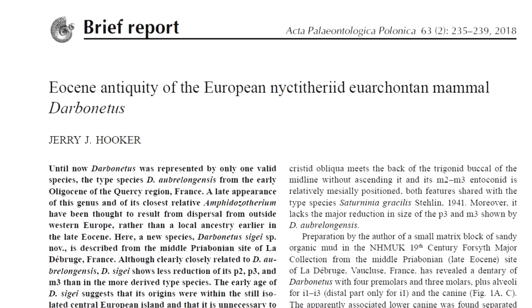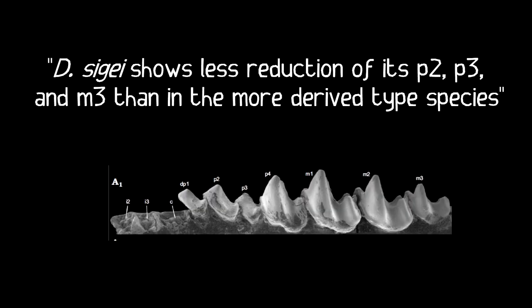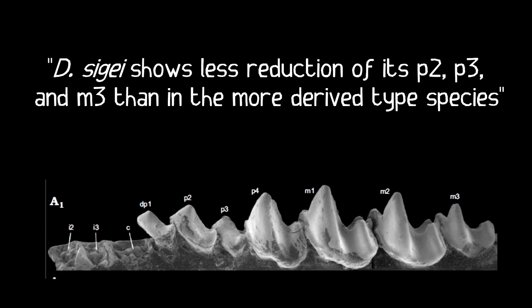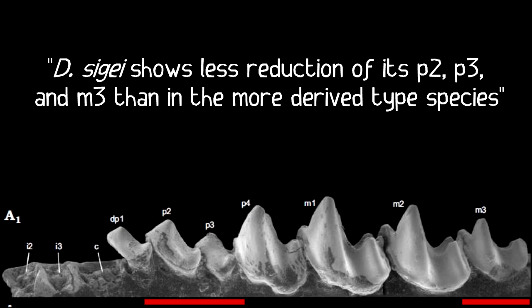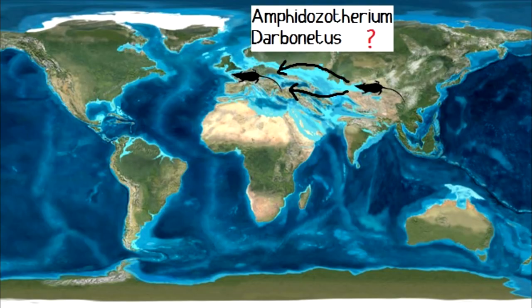Welcome to Chapter 2. The paper by J.J. Hooker concerns the discovery of a new species of the genus Dabanetus. Dabanetus zygai was the newly discovered species from France, and Dabanetus orprelongensis the type species. They differ in their dentition — notably, D. zygai shows less reduction of its p2, p3, and m3 than in the more derived type species — indicating D. zygai is a more primitive species. This is important for the main result of the paper, because Zygai thought in 1976 that Amphidozotherium and Dabanetus, late European nyctytherid genera, had entered Western Europe from outside, as they had no earlier close relatives in Europe.